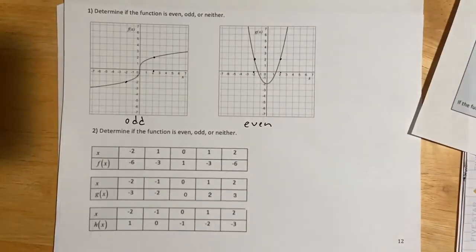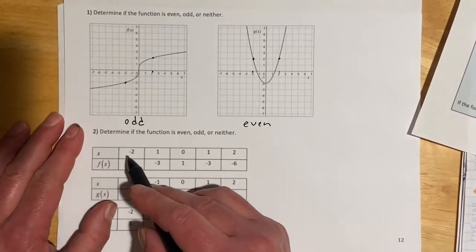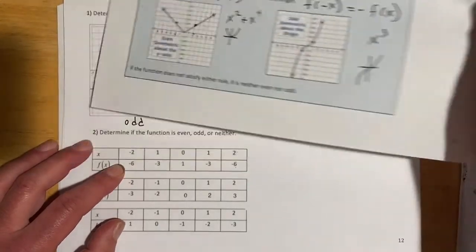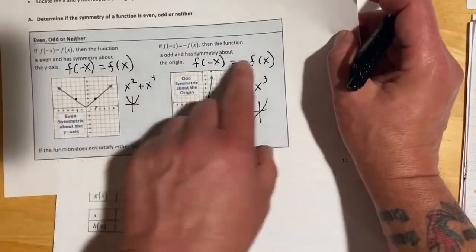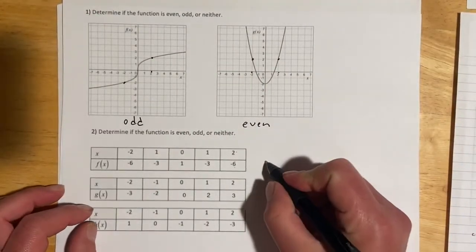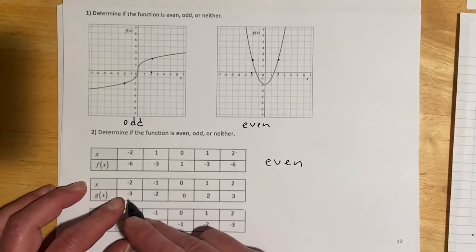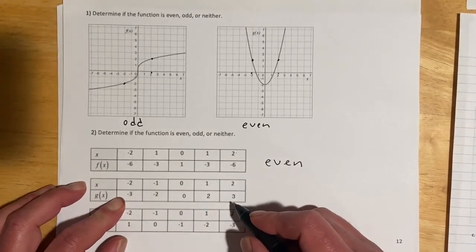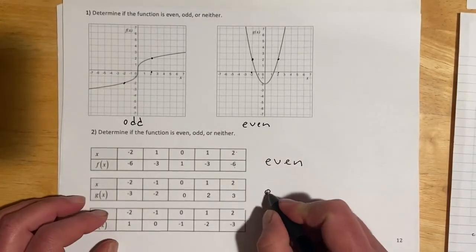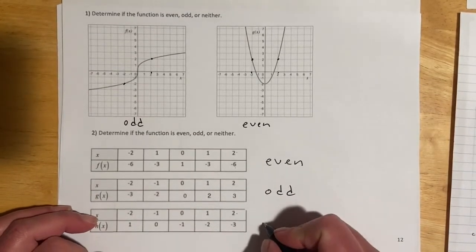For this graph, folding over the Y-axis shows it sits right on top of itself — that's even. When X is 2 we get 2, and when X is negative 2 we also get 2 — same output for opposite inputs. For the tables: when we put in opposite X values and get the same Y values, that's an even function. When we put in opposite X values and get opposite Y values, that's odd. When the outputs are completely different, it's neither.